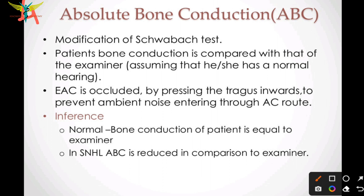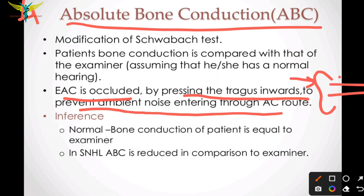The difference is that here the external auditory canal or the meatus is occluded, whereas in the Schwabach test the meatus is not occluded. To prevent ambient noise, the external auditory canal is occluded by pressing the tragus inside.